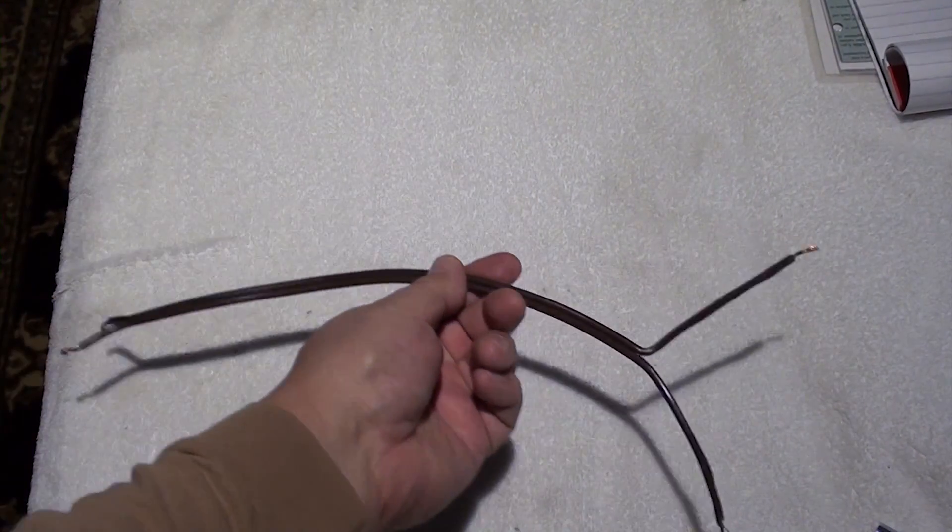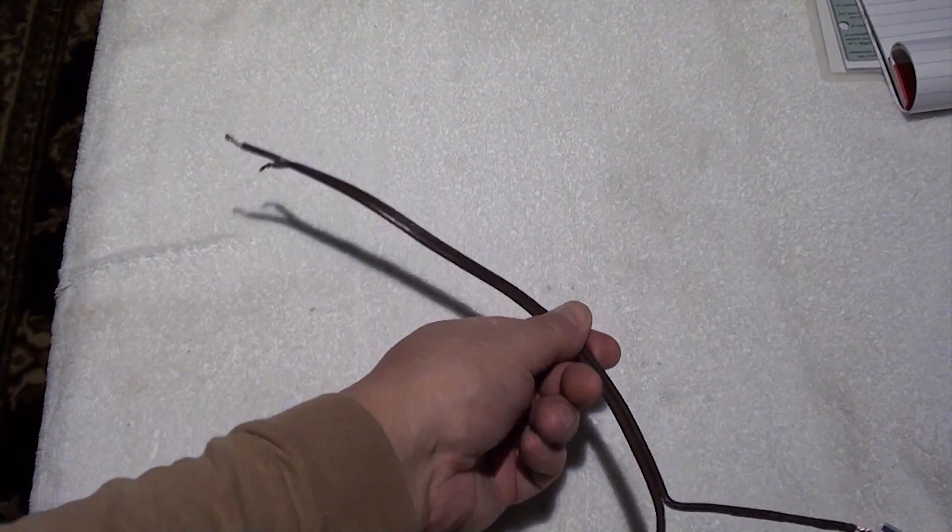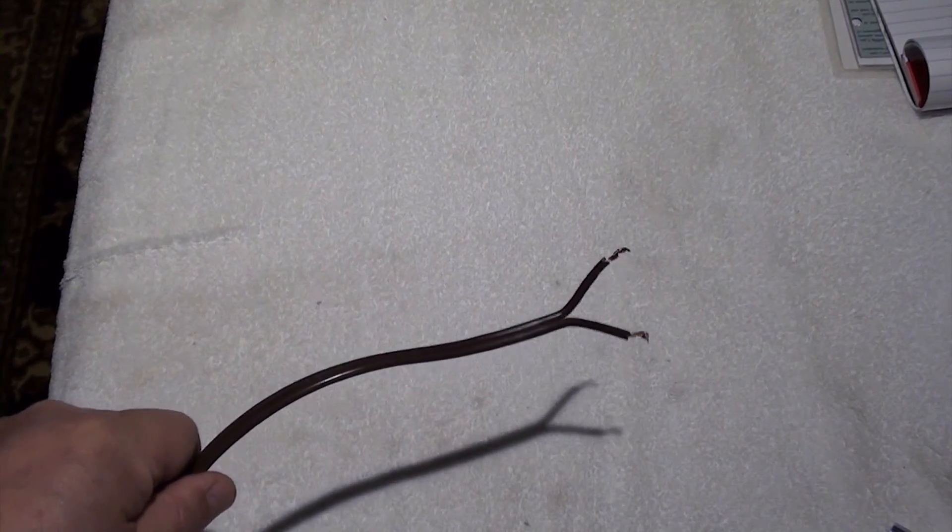Now that we know which battery is bad, what we're going to do is get some wire. I have a piece of extension wire here that I cut off. You want to strip both ends like the way it's shown here.